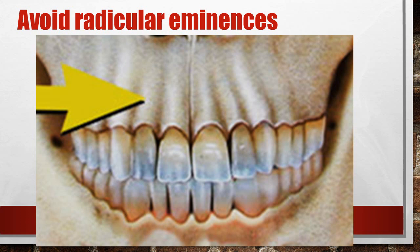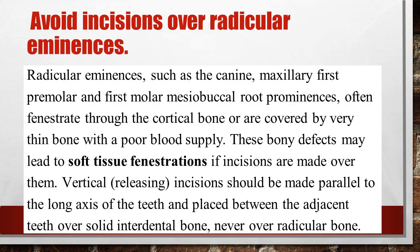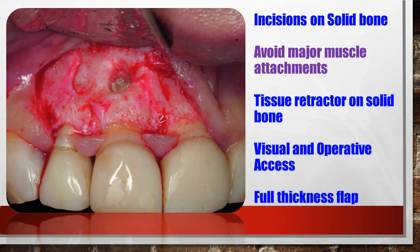The second principle is to avoid radicular eminences. The soft tissue is very thin in these areas because the root is protruding, and through fenestration the buccal bone will be exposed. In these areas the blood supply is very poor, so healing takes a very long time. This is why you avoid giving incisions over the radicular eminences — give it lateral to them, either mesial or distal.